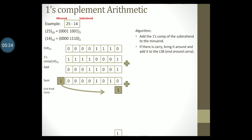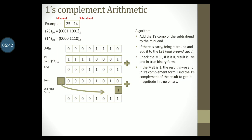Bringing the carry around and adding it to the LSB, we get the answer as 00001011. Now we go to the next step in the algorithm, which tells us to check if the MSB is 0. If the MSB is 0, the result is positive and in true binary form. Checking the MSB of this number, we notice it is 0. Since it is 0, we conclude that the result is positive and in true binary form.